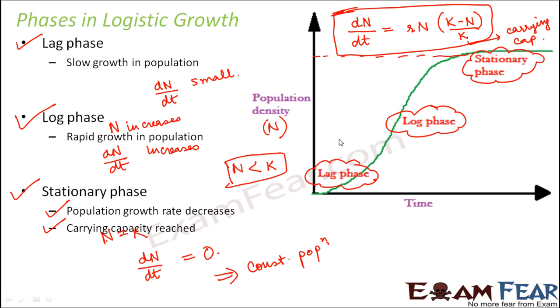So these are the three phases of logistic growth. The lag phase is followed by the log phase, which in turn is followed by the stationary phase.